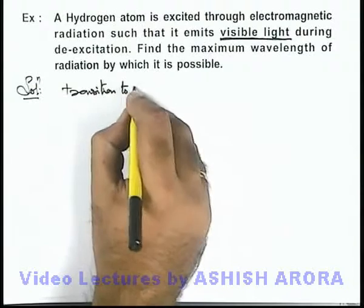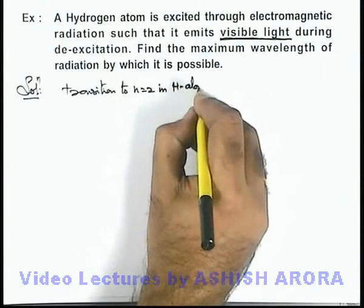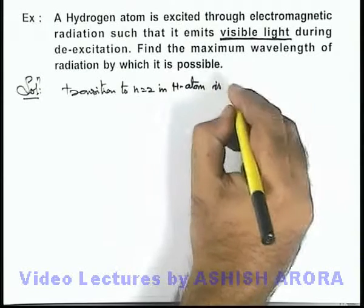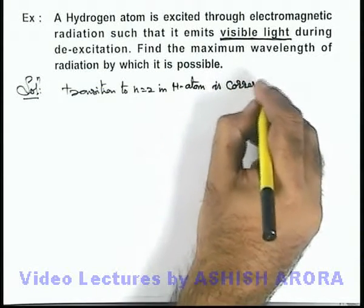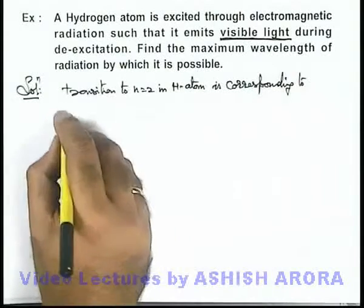Transition to n equal to 2 in hydrogen atom is corresponding to visible light or visible radiation.